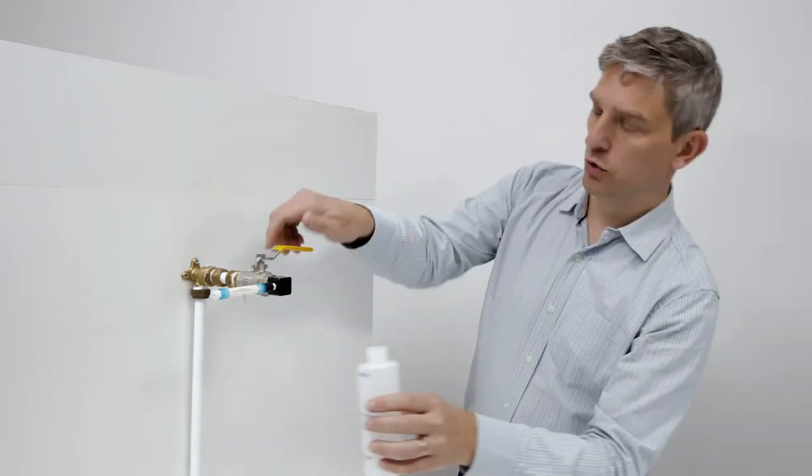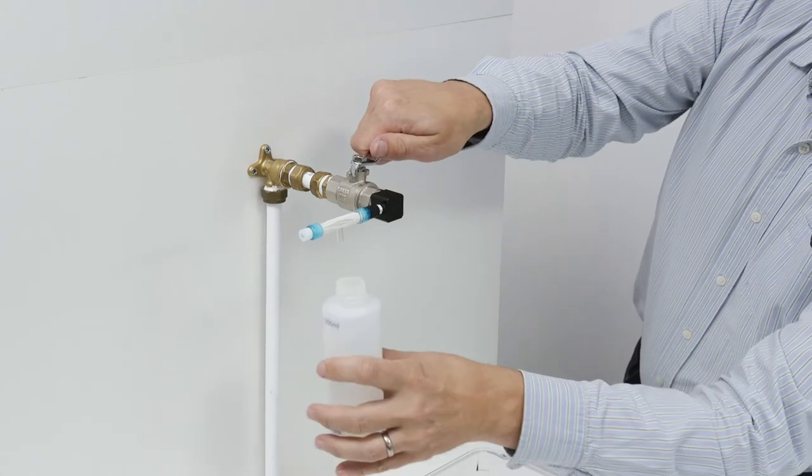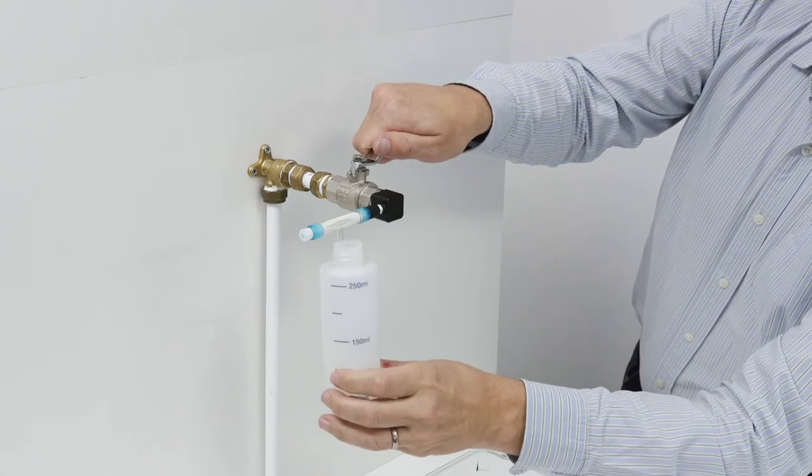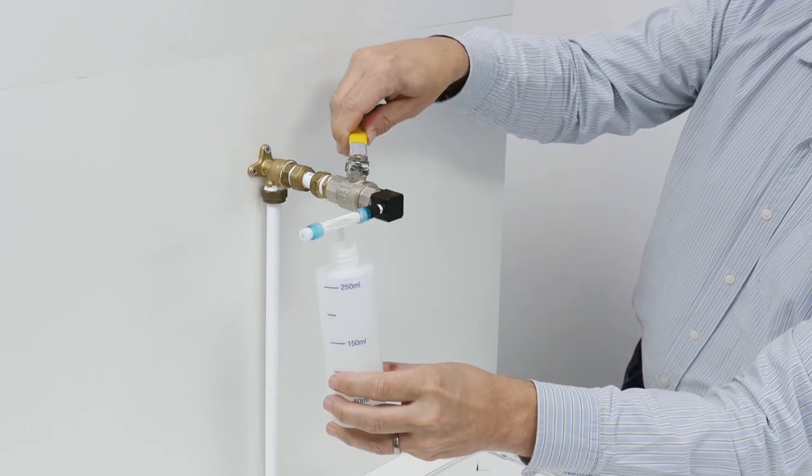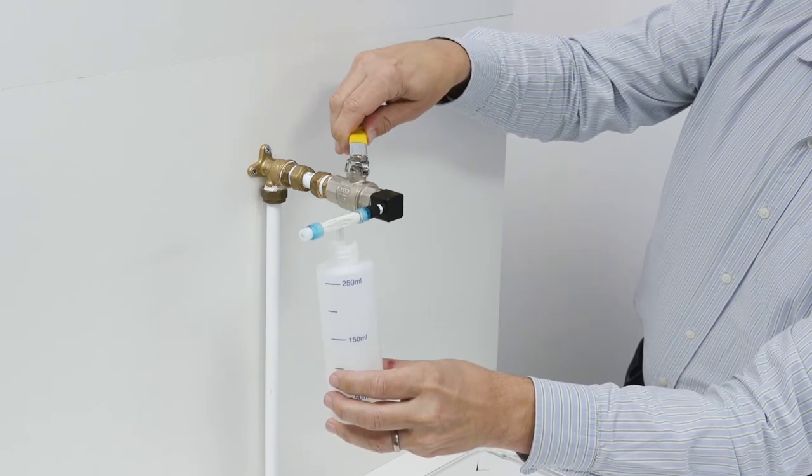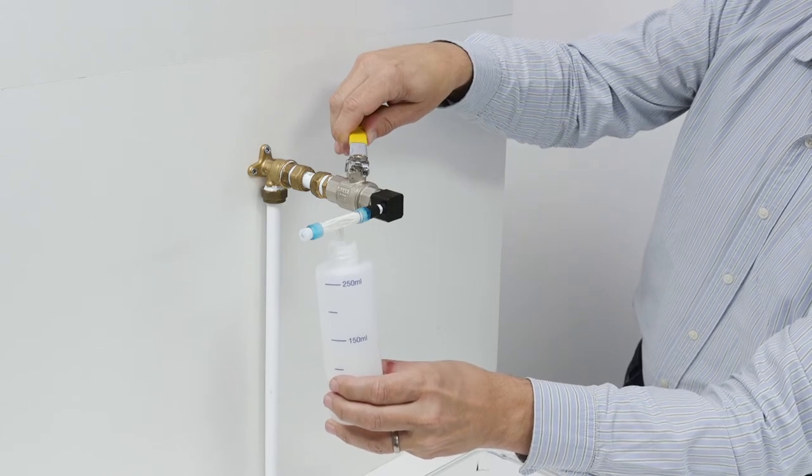We take the cap off, and then we can open the valve and start measuring the water that's passed through the filter. We keep going until we get to 250 milliliters.